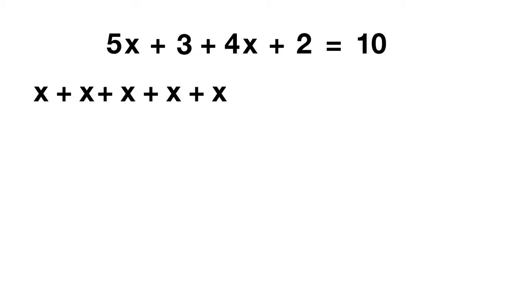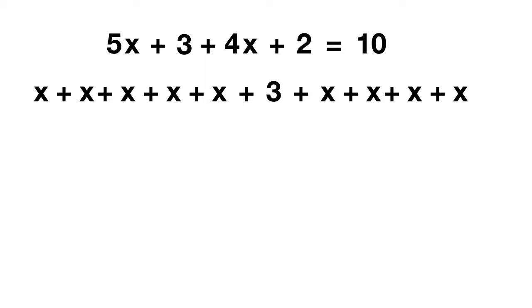Next in our equation we have plus 3. Then we have 4 more x's, which we could write as plus 1, 2, 3, 4 more x's. Finally on this side of the equation we have a plus 2.